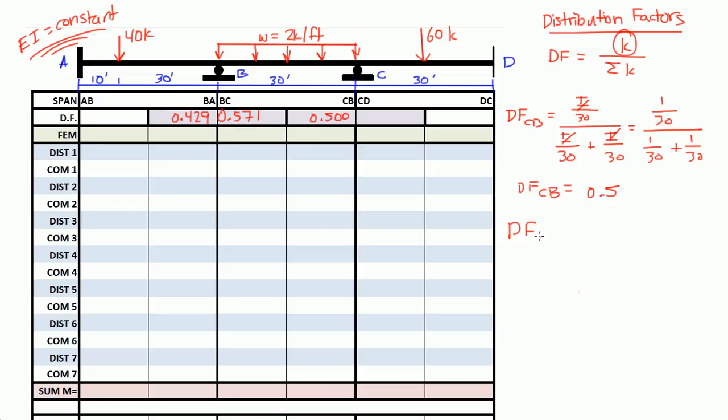And the distribution factor for CD is going to be the same thing, 1 over 30 divided by 1 over 30 plus 1 over 30. And that's also equal to 0.5, 0.500. And again, if you add the distribution factors at joint C, they should be equal to 1. So 0.5 plus 0.5 is indeed equal to 1.